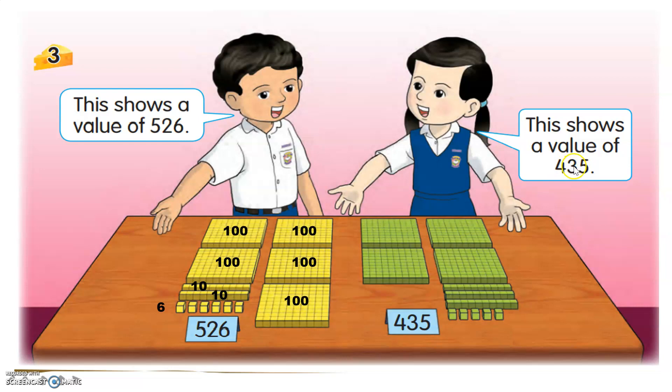This shows a value of 435. How did this girl get 435? The larger squares here represent 100. 100, 200, 300, 400.